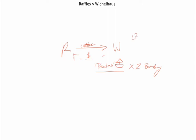One was coming in October, and that's the one Wichelhaus was talking about. And one was coming in December, and that's the one that Raffles was talking about. So we have parties having a contract that is conditional upon their belief about which boat was coming — one thought it was the October Peerless boat, and one thought it was the December Peerless boat.